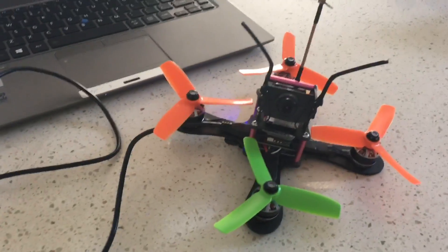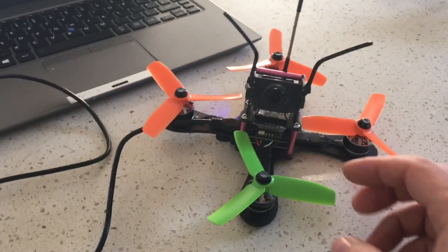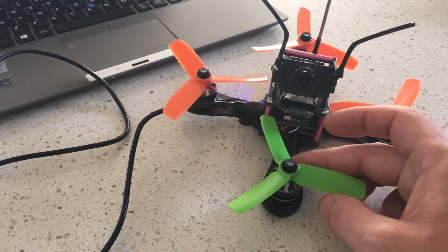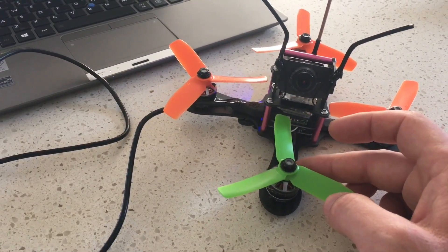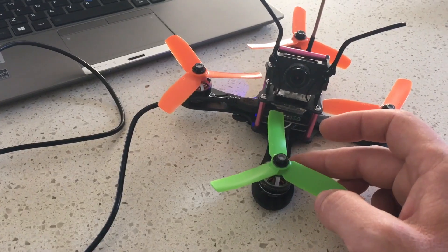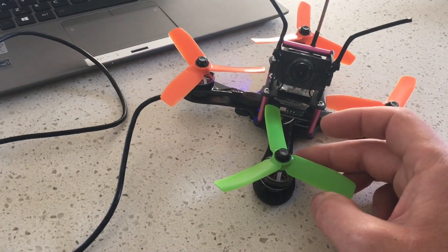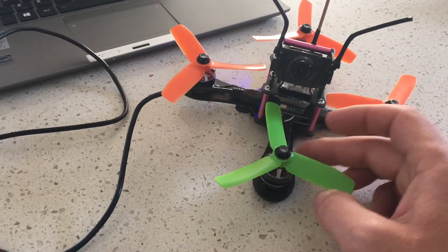The build generally went according to plan. A few things decided in the end to use these Lumenier 1806 2500 kV motors instead of the original RCX motors that I had planned.